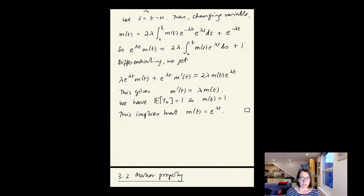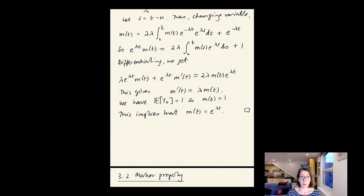So we have a population which, at least in terms of its mean, is growing exponentially. Problem sheet one contains a question showing that this is true not just in terms of the mean but also in an almost sure sense.